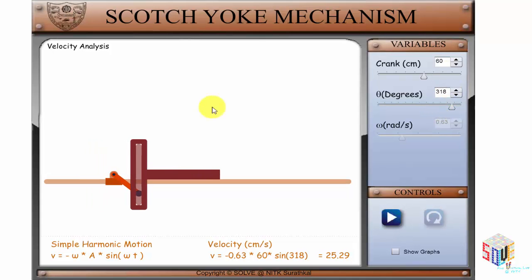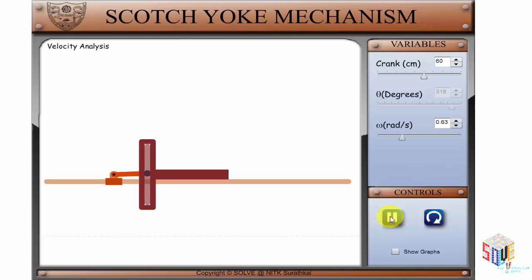Once you set it up for the required angle theta, corresponding diagram can be seen here. Press play to see and analyze changing velocities of the scotch yoke mechanism.